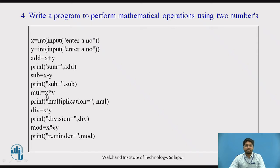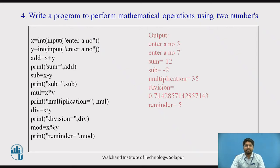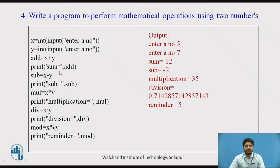We have seen all these operators in the previous video — please go through that to know the mathematical operators. The output would be: the first message is 'Enter a number' — user enters 5, then 7, so x and y are assigned as 5 and 7. It shows sum equal to 12, subtraction, multiplication, then division, then you get the remainder. So 5 divided by 7 — the remainder would be 5.